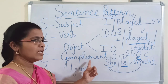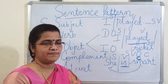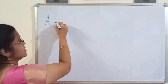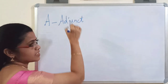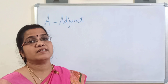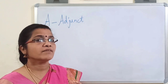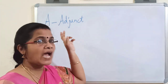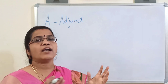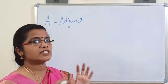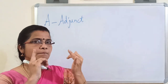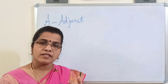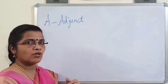Now let's move on to the fifth element: adjunct. A stands for adjunct — it is an additional element in a sentence. Unlike complement, which is an essential element, adjunct is additional. Under this you have all adverbs. To remember easily, use the acronym MPT: manner, place, and time. Adverbs can show manner, place, or time.